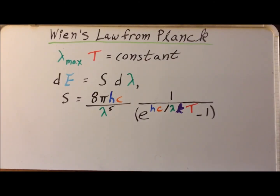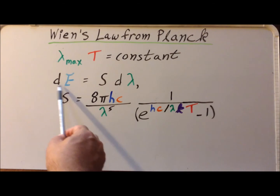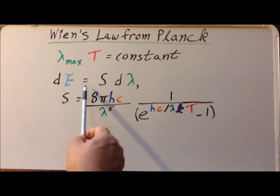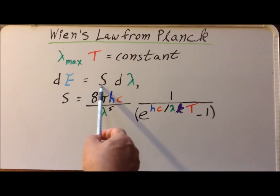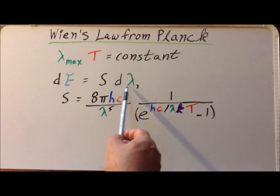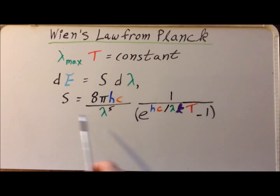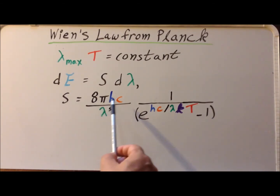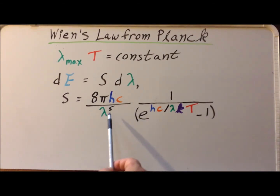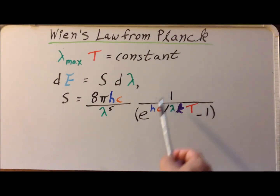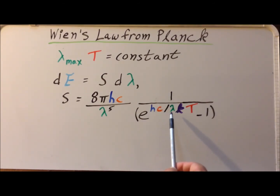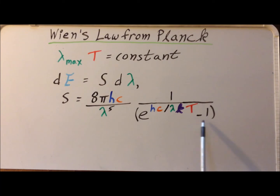For the Planck distribution, we have the differential of the energy is equal to S times d-lambda, where S has the complicated form of 8 pi Hc over lambda to the fifth times one over the quantity e to the Hc divided by lambda kT, minus one.